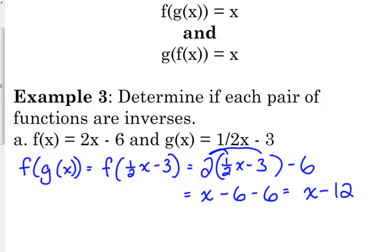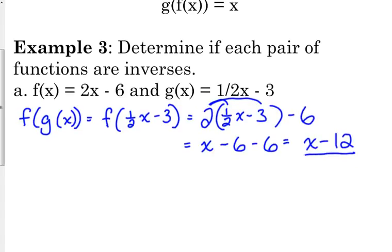Now technically at this point we could stop because we don't get x as the answer. But I am going to go ahead and do g of f just to show you that they are not inverses that way either. Okay. So g of f. We got x minus 12. We're supposed to get just plain x if they're inverses.